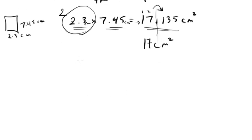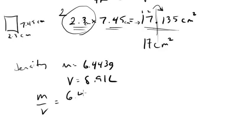Let's do another example. Let's say we were trying to figure out a density question. And we found that the mass was 6.443 grams and the volume was 8.91 liters. Well to find the density we just do mass over volume. So we would do 6.443 grams over 8.91 liters.